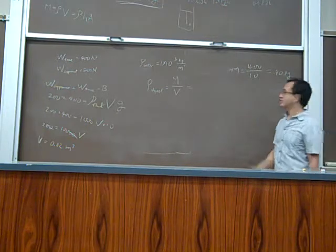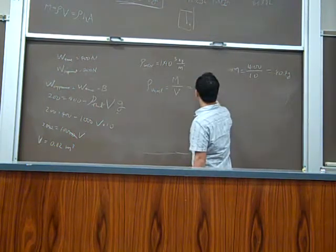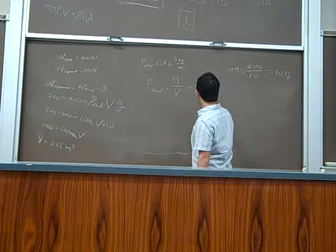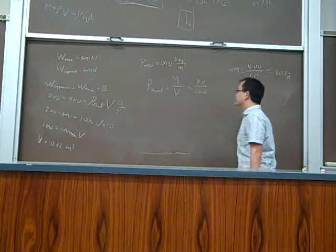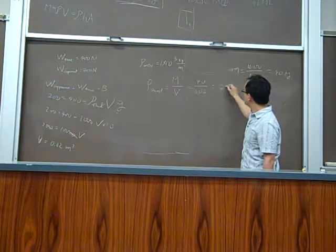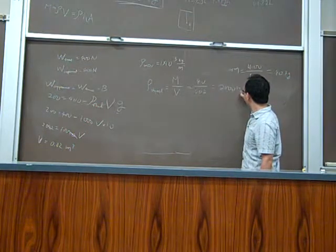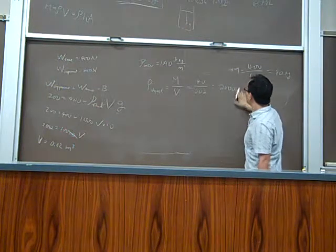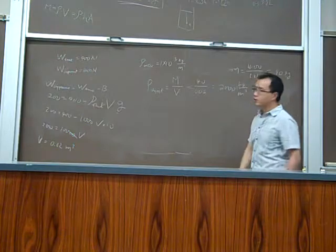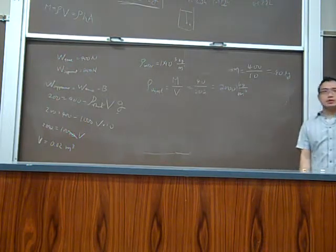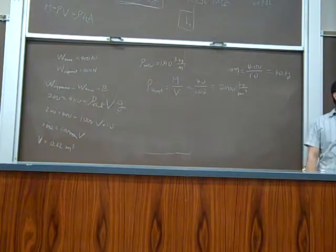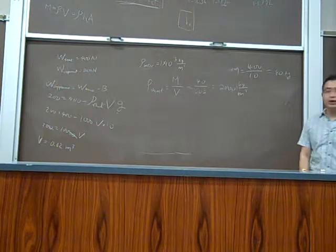We calculate approximately, use 10 instead of 9.8. So it's 40 divided by 0.02. So it's 2,000. So it's double of the water density. It's understandable, because the apparent weight is half of the true weight.